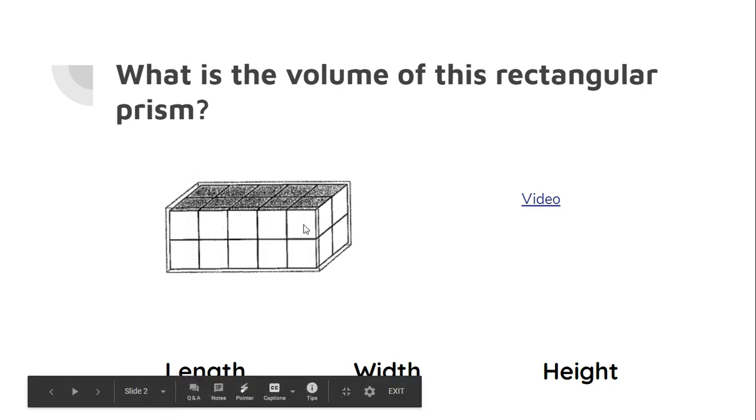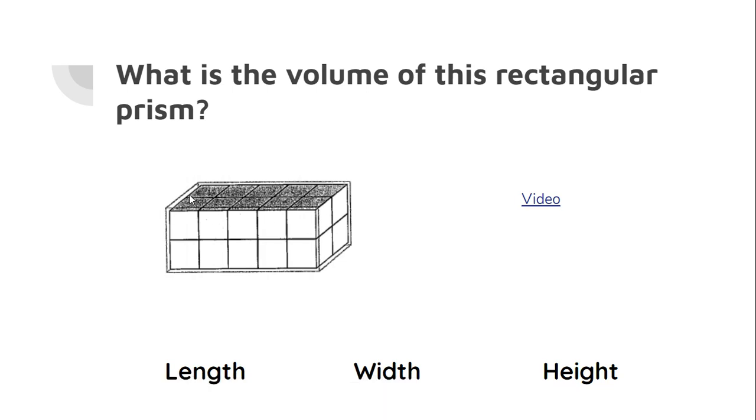When I look at this picture I can't see the bottom layer very well but let's look at this top view. Okay, if I counted the top I know that each layer has the same number in it so 2, 4, 6, 8, 10.